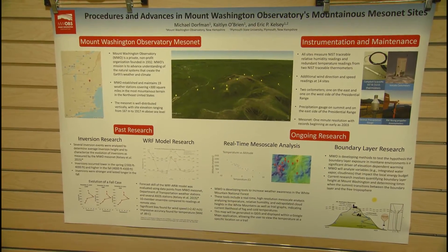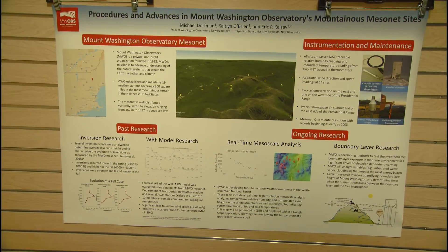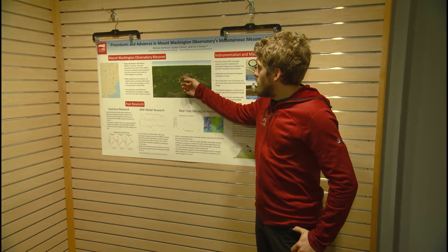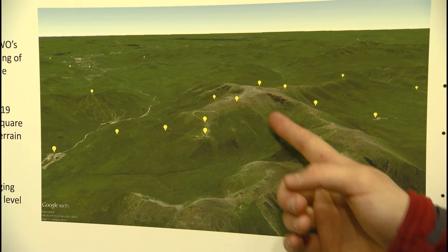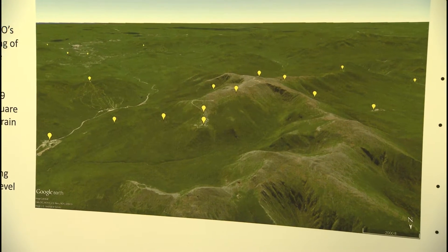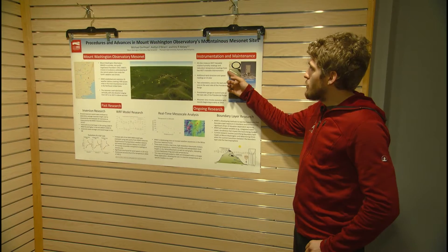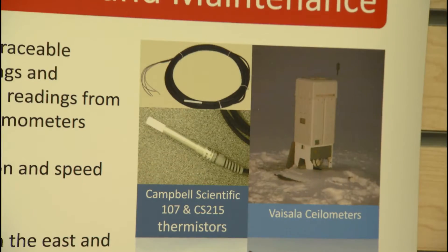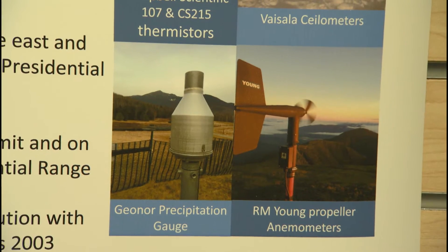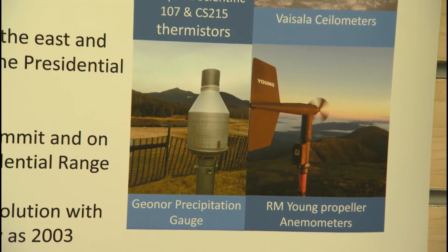The Mesonet is a network of 19 different remote sites that measure meteorological variables. You can see these remote sites vary significantly in terms of elevation, and they are also really dense — they fit within 200 square miles. Each site measures both temperature and relative humidity, and some sites also measure wind speed, wind direction, as well as additional variables such as precipitation and cloud height.